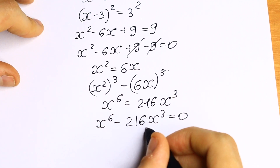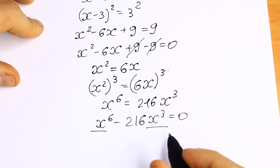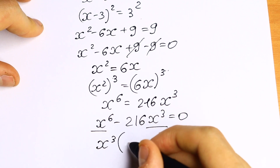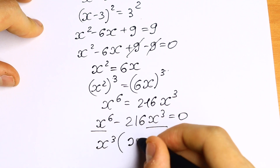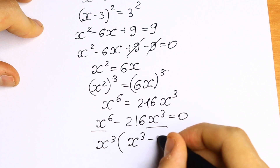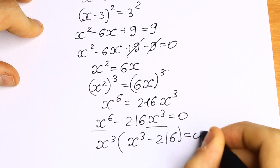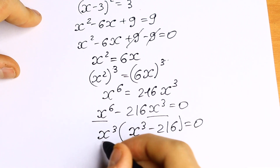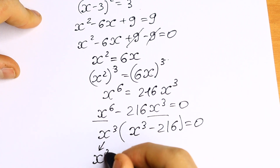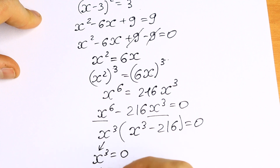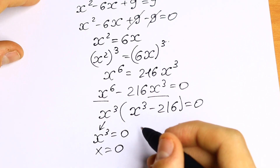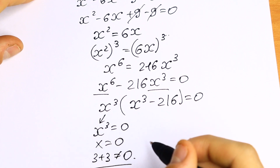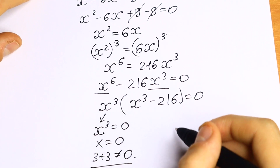What we're going to do next? Take a look. We have x cubed and we have x to the sixth power. We can factor out x cubed, and in parentheses we will have x cubed minus 216 equal to 0. So as you can see we have a product equal to 0. So x cubed equal to 0, and from here x equal to 0, which is not correct because 3 plus 3 is not equal to 0. So this root is not good for us.